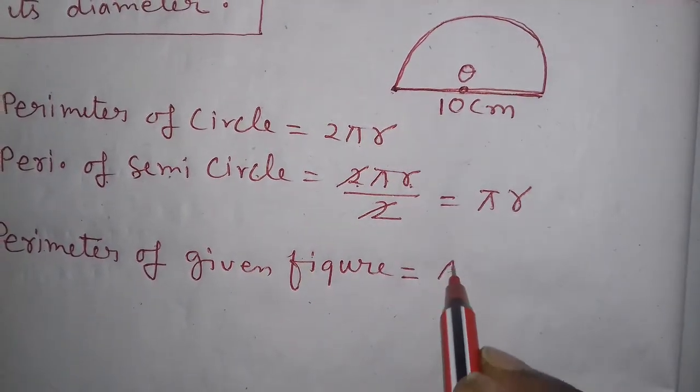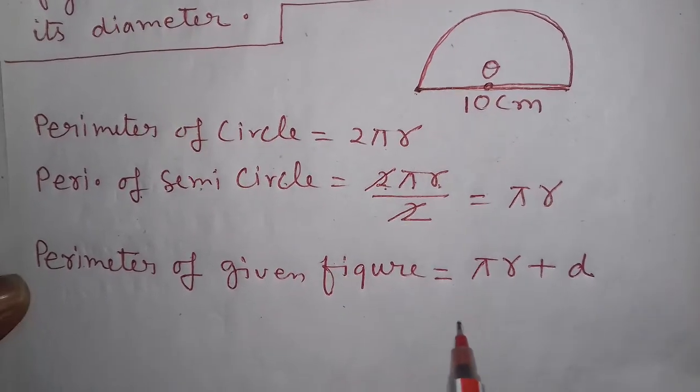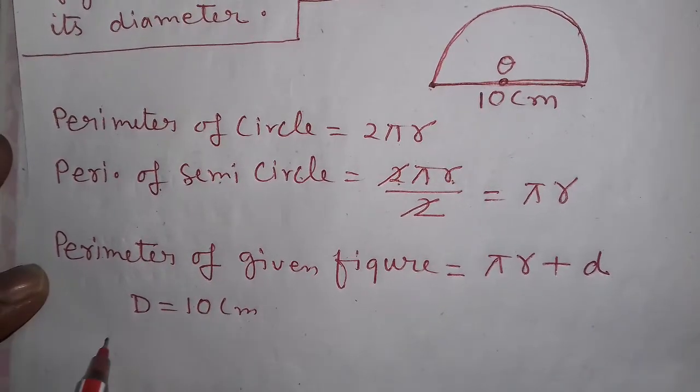Therefore, radius r equals d/2, which is 10/2 = 5 centimeters.